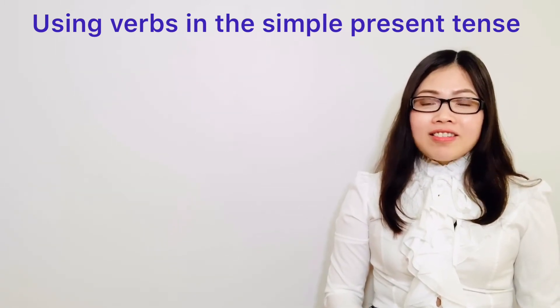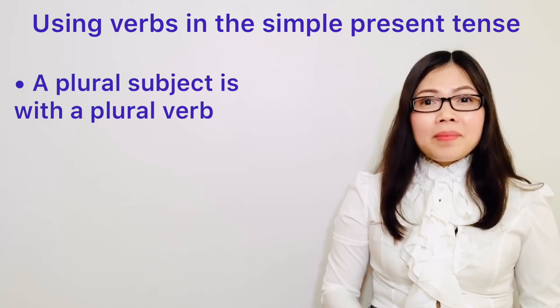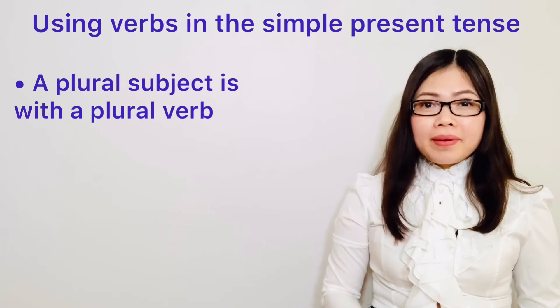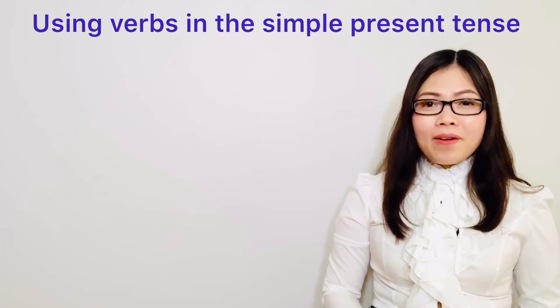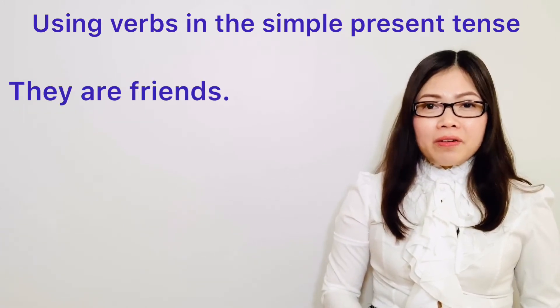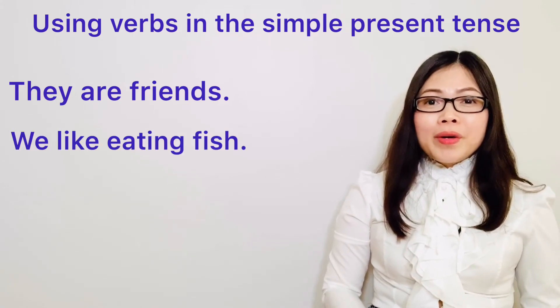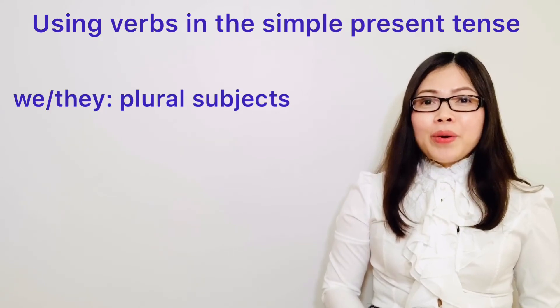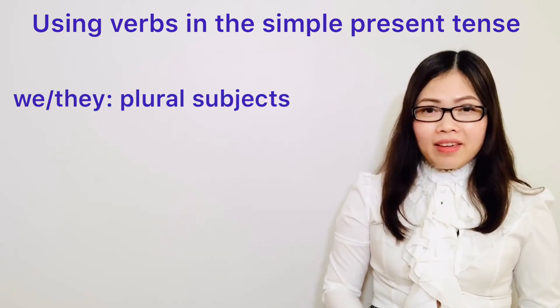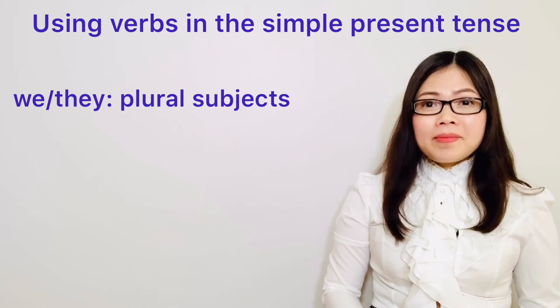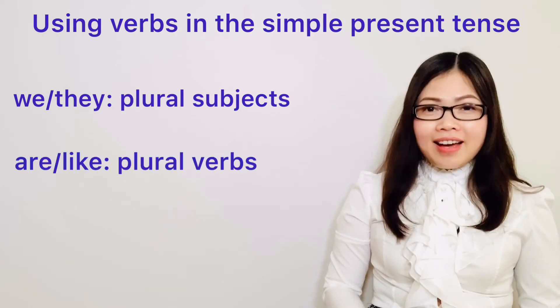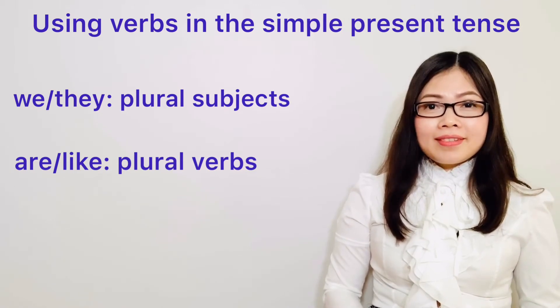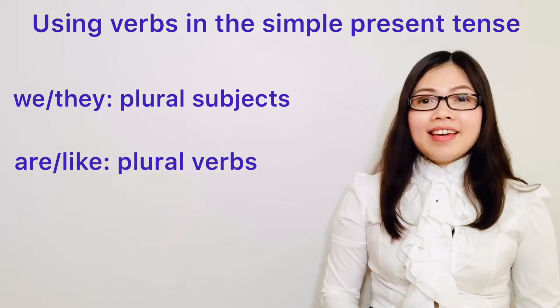Also, a plural subject is always with a plural verb. So, we and they are plural subjects. Are and like are plural verbs. Is it clear?